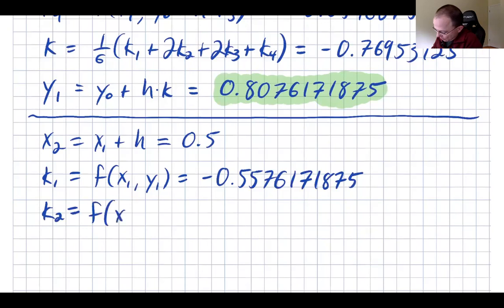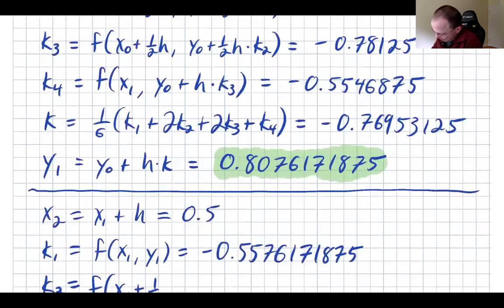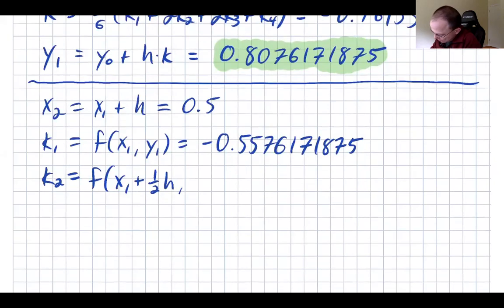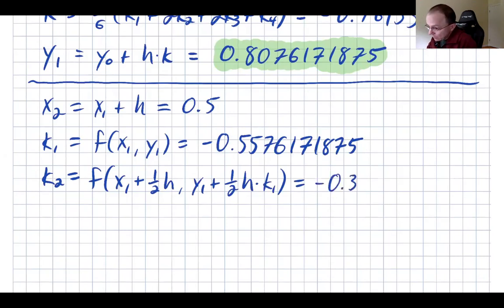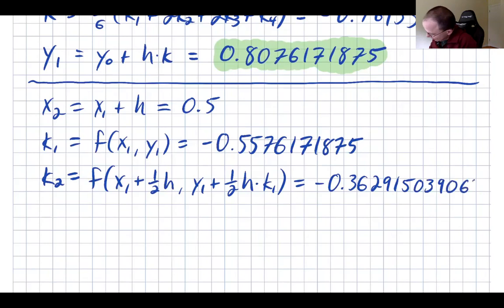For k₂, this is our half-step estimate: we use x₁ + h/2 and a half step using the k₁ slope. These formulas aren't too hard to remember if you just think about the half steps. That gives k₂ = −0.3629150390625.